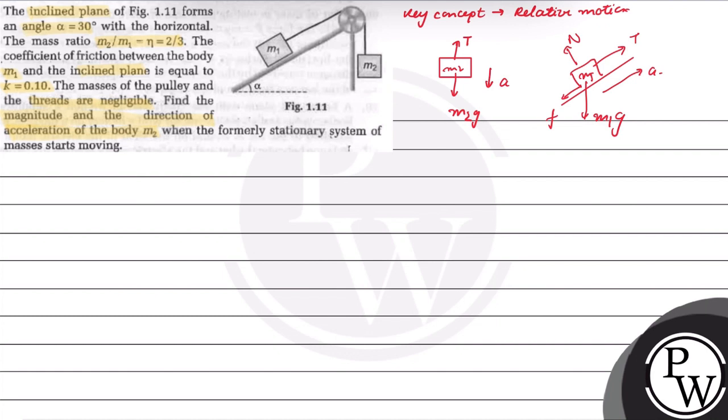Now, the component of M1G along the normal vector will be M1G cos alpha, and component of M1G along the inclined plane direction will be M1G sin alpha. We know that normal N is equal to M1G cos alpha, as in this direction there is no movement. And friction is equal to mu times N, that is normal. In this case mu is given as k and N is given as M1G cos alpha.